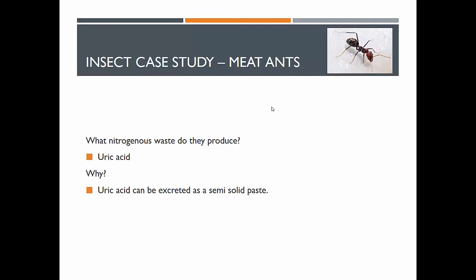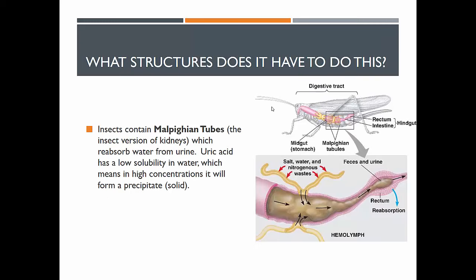This means that insects produce uric acid, which can be excreted as a semi-solid paste. They have a particular adaptation: the Malpighian tubes — essentially the insect kidney. What happens is they produce urine containing uric acid, and water is then extracted from that solution. If you think of uric acid as a solute in a solution, it crystallizes really well at lower water concentrations. This means insects are able to excrete crystalline uric acid as a semi-solid paste.